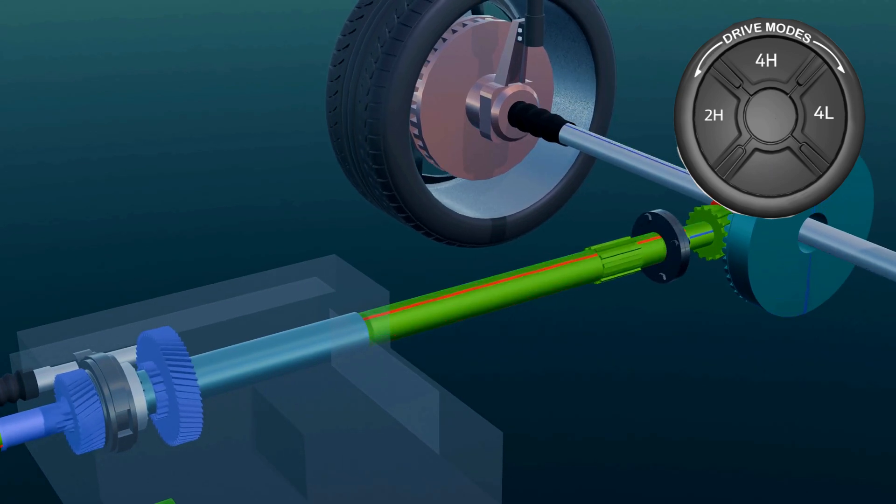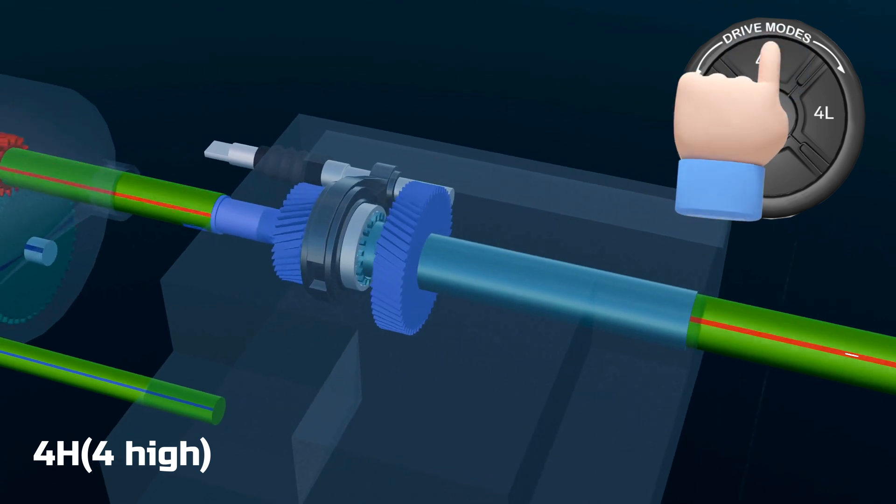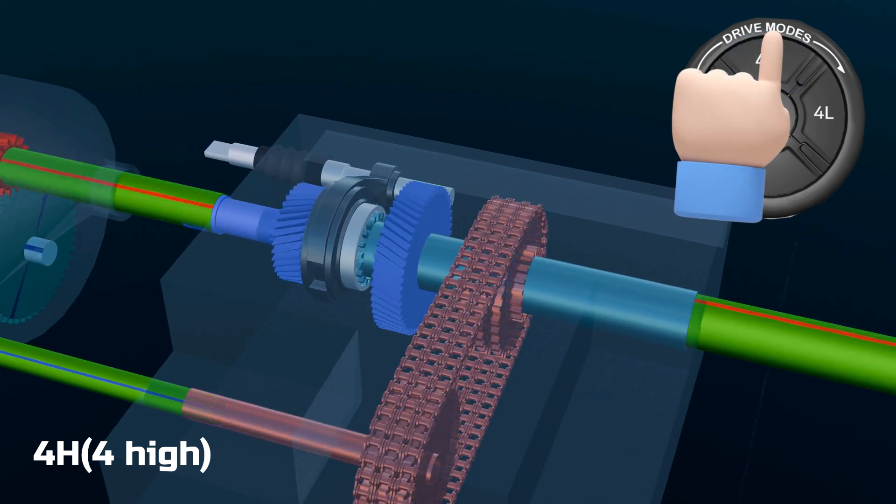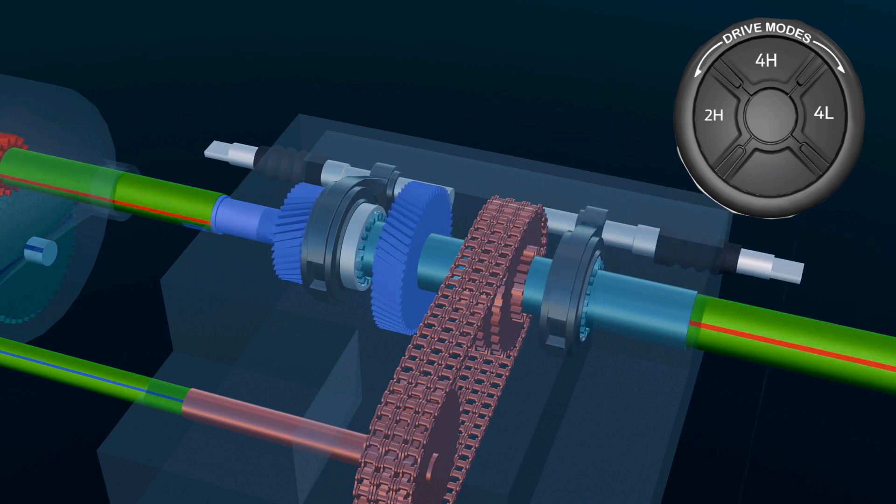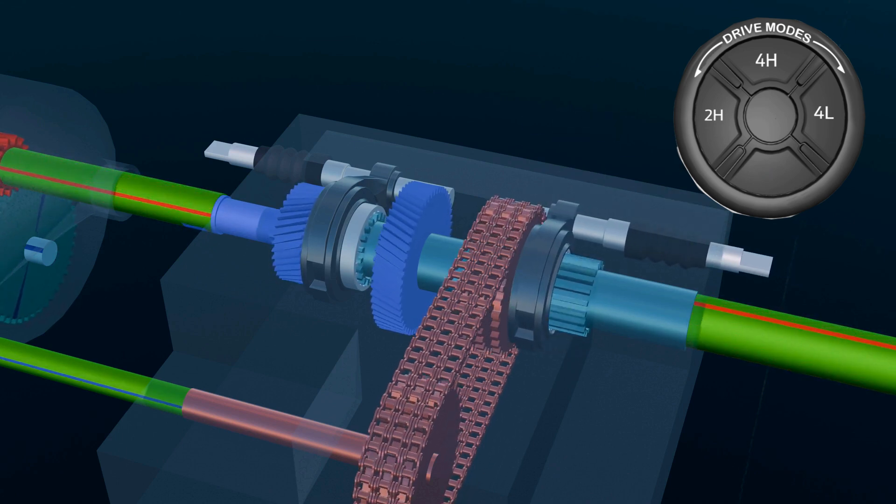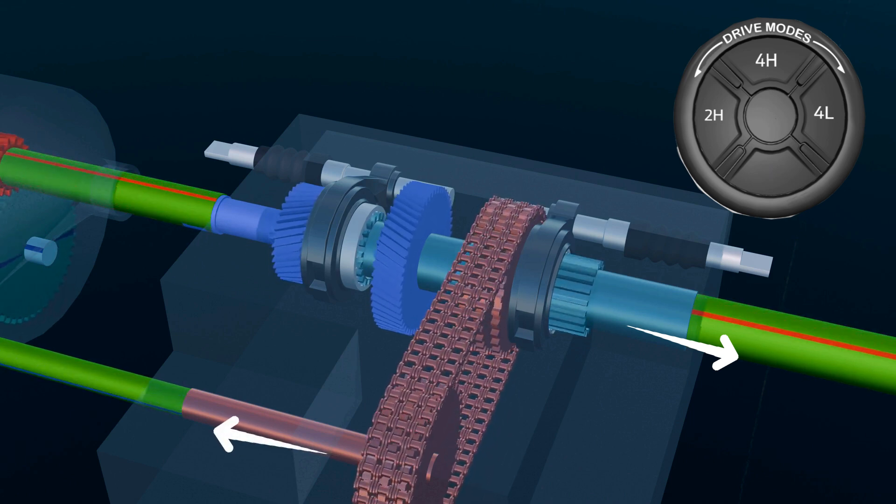To activate four-wheel drive, a chain mechanism connects the front driveshaft. Initially, power goes to the rear, but a second gear and a sleeve mechanism link the front shaft as well, enabling power delivery for all four wheels. This setup works well for standard off-road conditions, and it's known as 4H or four-wheel high mode.